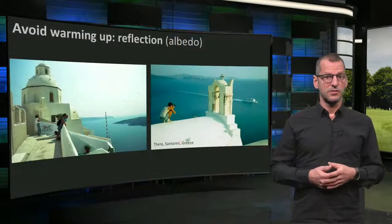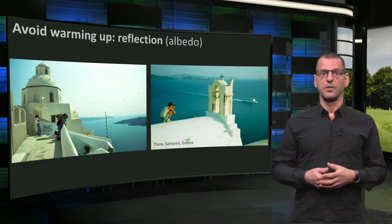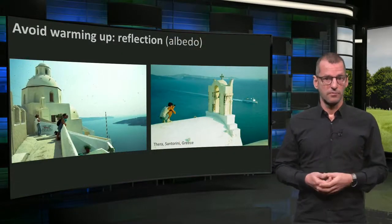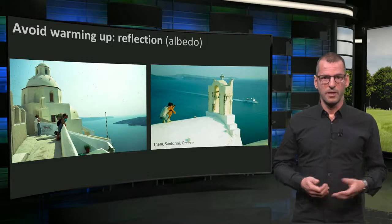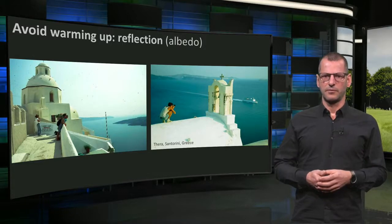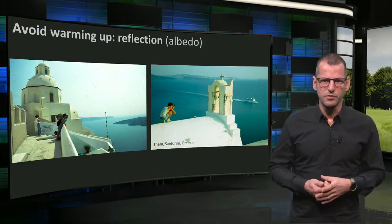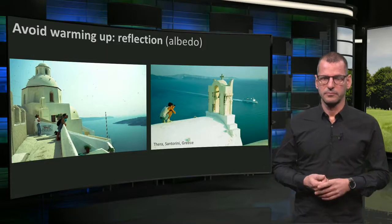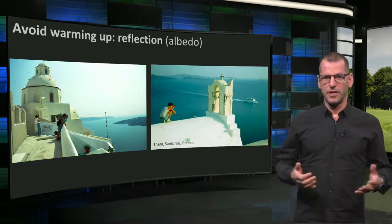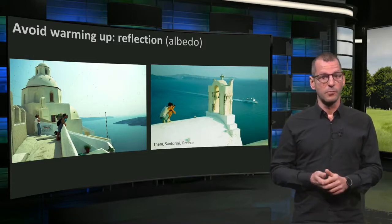Light-reflecting surfaces can then avoid the absorption of solar heat in the building envelope. These are typical examples of that: whitewashed stone walls and roofs in Greece. The reflective factor of surfaces is called albedo.